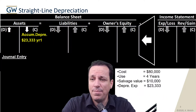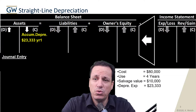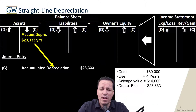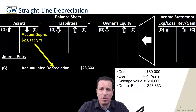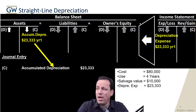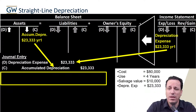Let's see how that looks on the balance sheet and income statement. We'll report accumulated depreciation of $23,333 as a credit, and we'll build that credit balance each year until we've depreciated the full value we expected to use. We'll also have depreciation expense each year of $23,333.